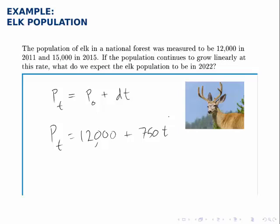We could use 2015 as year zero, in which case instead of 12,000, we have 15,000, but that would also change what value we plug in for T to make our prediction. Whichever way we do it, as long as we're consistent throughout the problem, we get the same answer at the end.